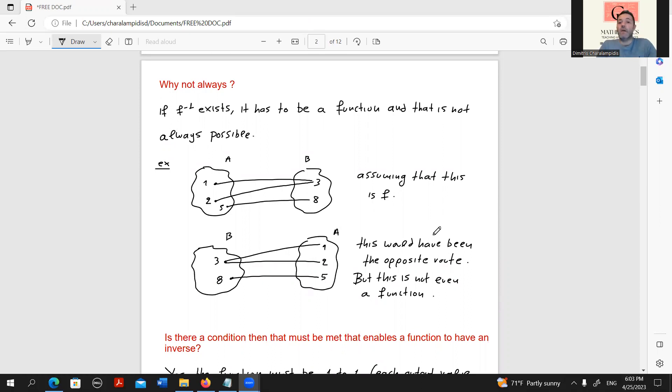On the top diagram, we have a function that takes 1 and relates it to 3, takes 2 and relates it also to 3, and takes 5 and relates it to 8. This is indeed a function. The opposite way now would have been taking 3 and relating it to 1, but at the same time taking 3 and relating it to 2. And this is not a function by a function's definition, because a function between two sets has to take points from set A and relate them in a unique way to points of set B.